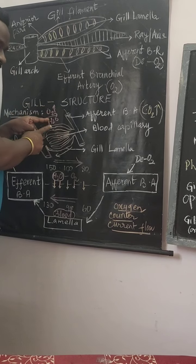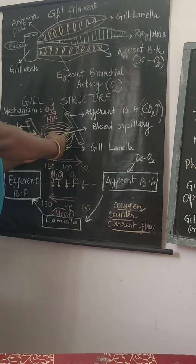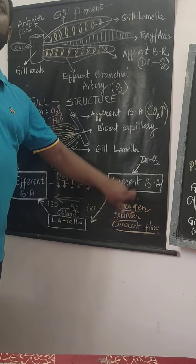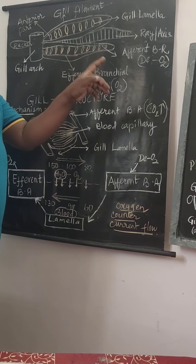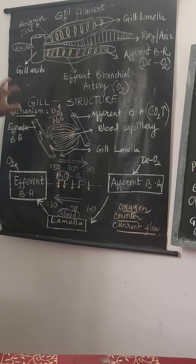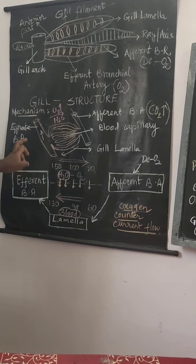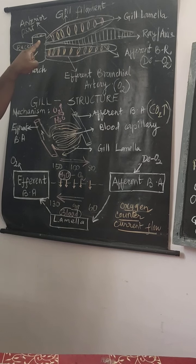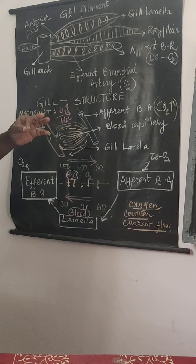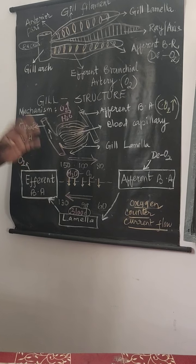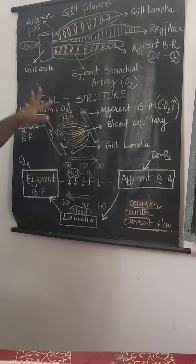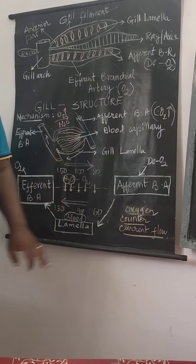This process, where oxygen gets into the capillaries and carbon dioxide comes out of the capillaries, is called counter-current flow. The method of respiration found in gills is the counter-current flow of oxygen. All the efferent branchial arteries are directly connected to the dorsal aorta, which supplies oxygenated blood to every part of the body in case of fishes. This completes the mechanism of counter-current flow of oxygen.